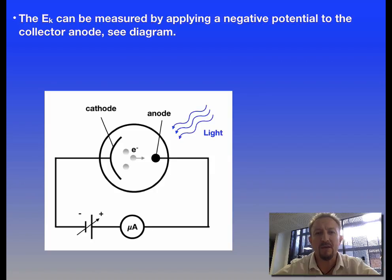When we put on our light just beyond the threshold frequency we're going to generate a current which flows. The electrons are emitted from the cathode, they move across to the anode and as a result they move back to that cathode making our current.